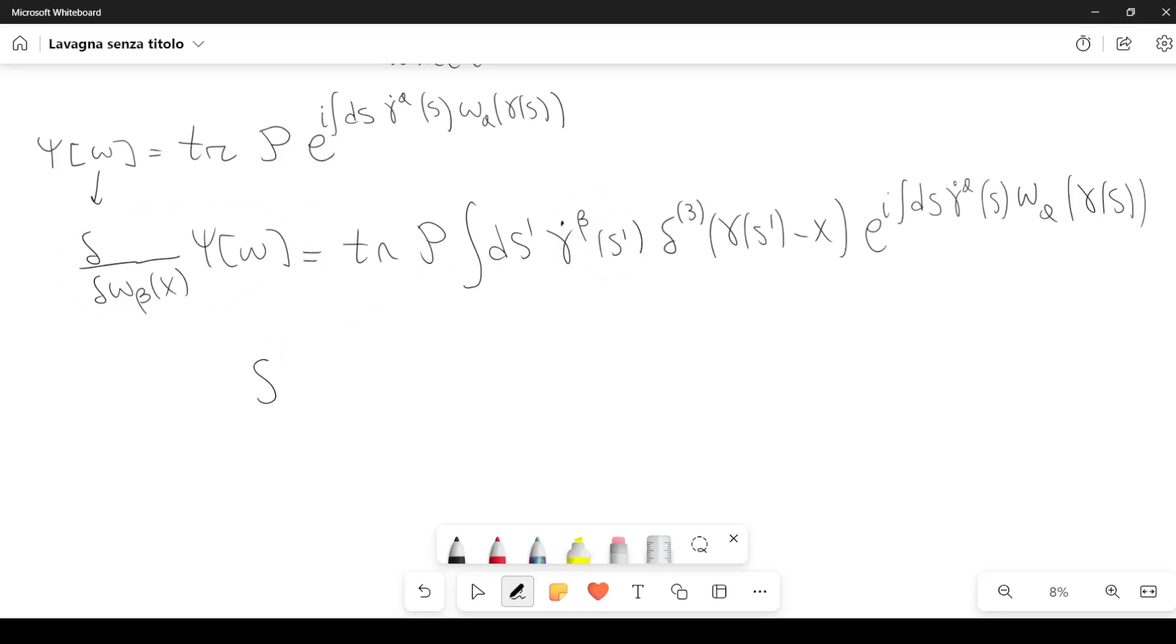So the idea that you can get from this is that if you take another functional derivative with respect to omega alpha of x, then you have functional derivative with respect to omega beta of x of psi of omega. This would be proportional to gamma dot beta of s prime, gamma dot alpha, and then here we'll have something like s double prime, and you also have an integral over s double prime there.